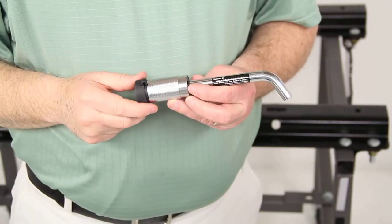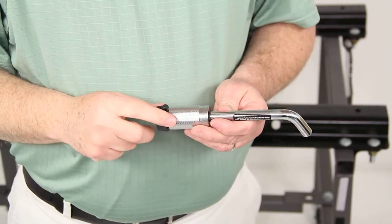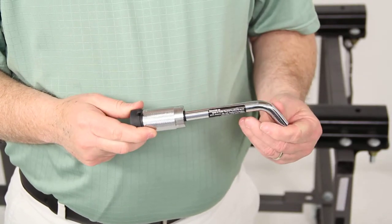Today we're going to review part number TR63254. This is a tow-ready base rail lock for fifth wheel trailer hitches.